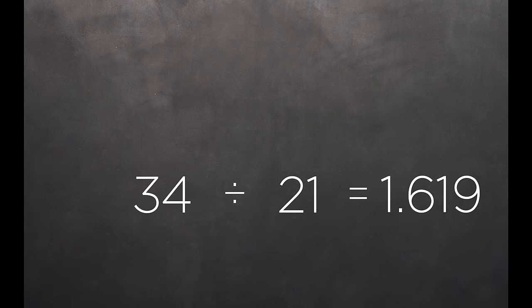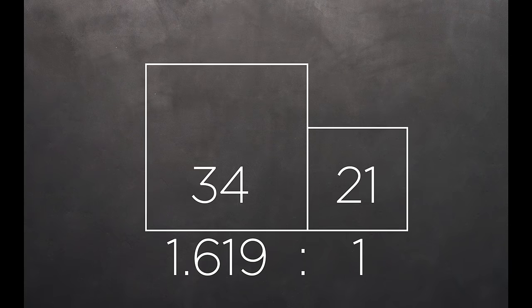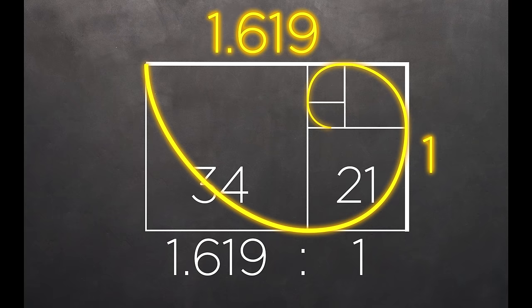When we take any two successive Fibonacci numbers, the ratio is very close to the golden ratio and can be visualized as a spiral.